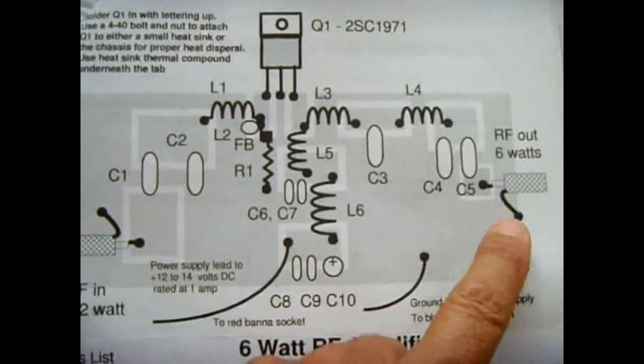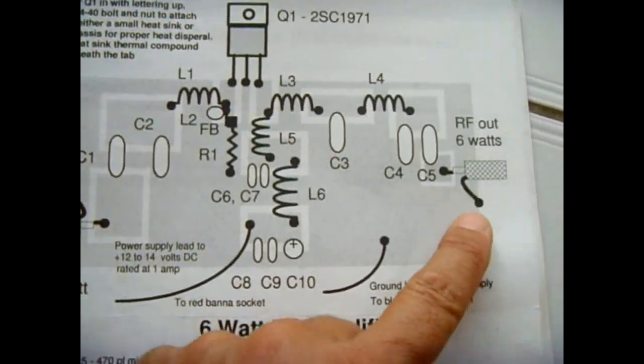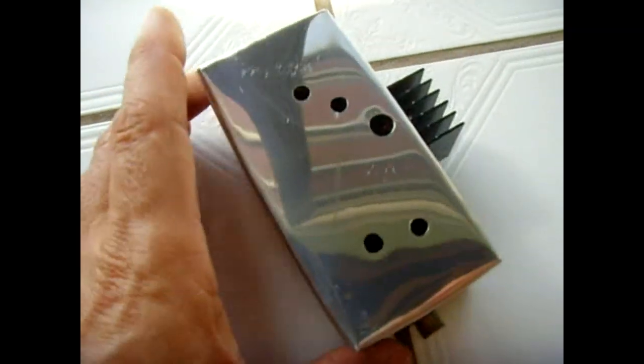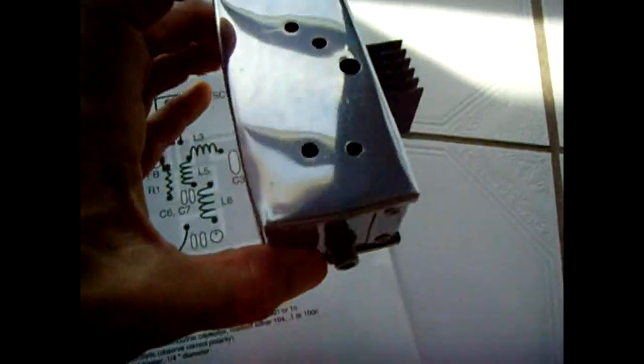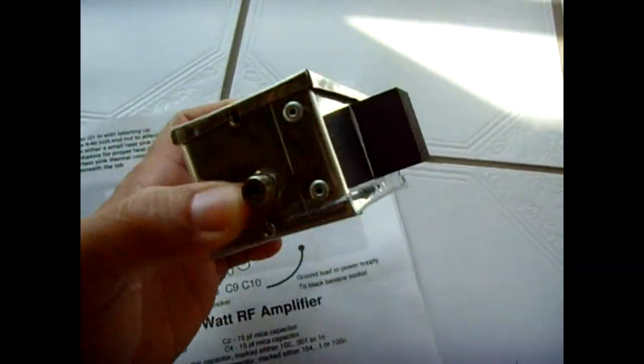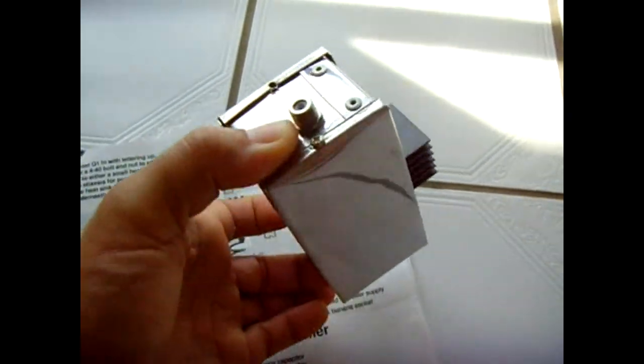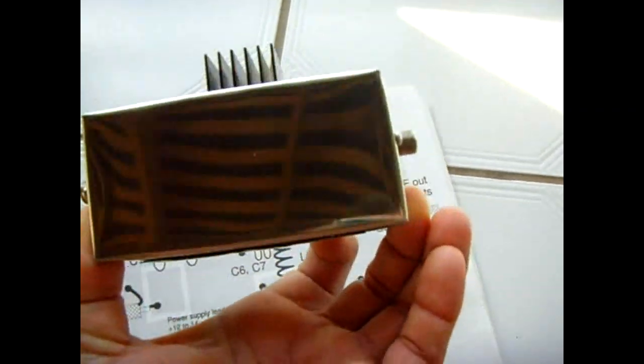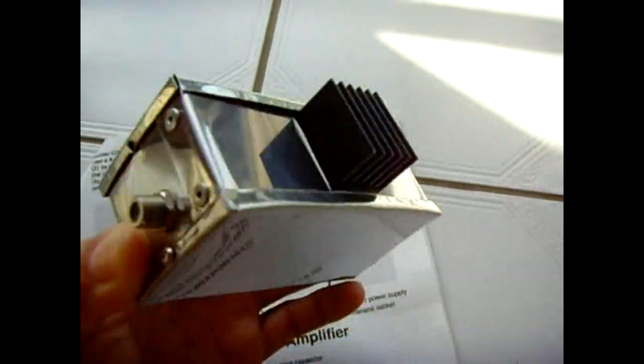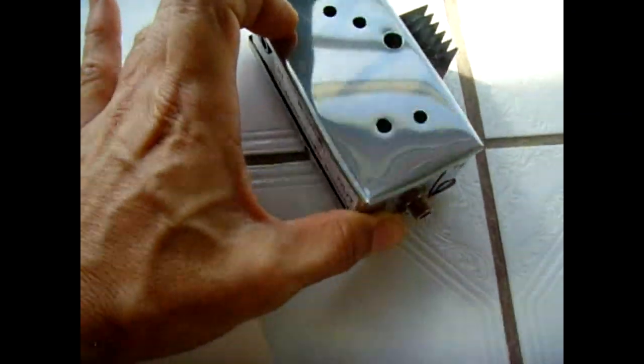I have the same coax. I have 75 ohm. This is the case I made right here. Let me show you this. I had a bunch of stainless steel laying around from an old microwave oven, so I made this box. I had a heat sink laying around. So that's that.